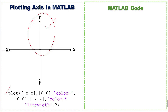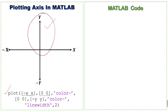To plot or draw axes in MATLAB, we first use the plot command and insert the limit of the x-axis from negative to positive. For the y-axis values we use 0, 0, because on the x-axis y is equal to 0. Then we specify the color of this line and use a solid line.